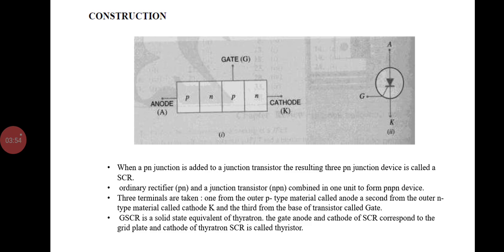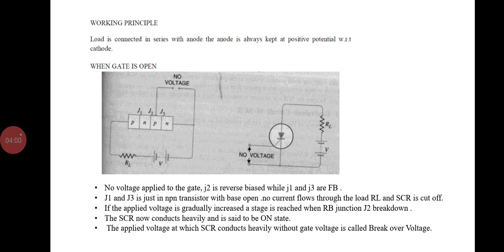The SCR is also called the thyristor. Looking at the working principle, there are two conditions. First condition: when the gate is open and no voltage is applied to the gate, J2 is reverse biased while J1 and J3 are forward biased. No current flows through the load RL and the SCR is cut off. As the applied voltage is gradually increased, a stage is reached when the reverse biased junction J2 breaks down. The SCR now conducts heavily and is said to be in the on state. The applied voltage at which the SCR conducts heavily without gate voltage is called the breakover voltage.